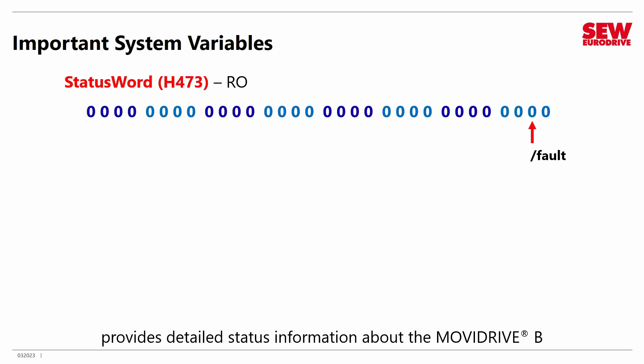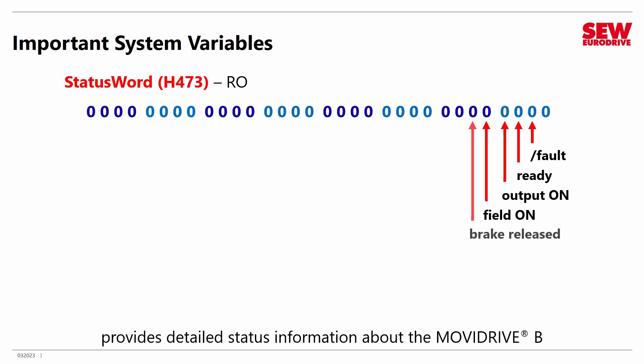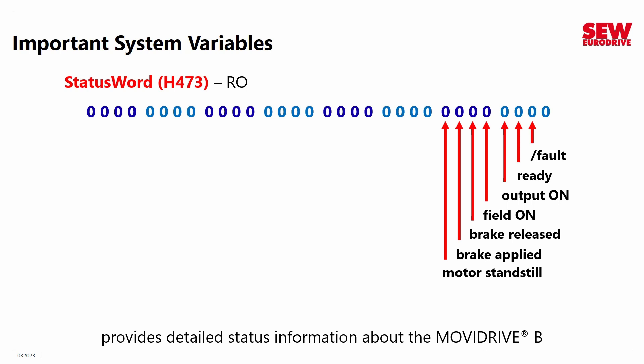Pay attention to that — some signals are inverted signals, most of them aren't. For example, the READY signal changes to 1 when the VFD is ready and 0 when it isn't. OUTPUT ON tells us the output transistors in the VFD have been activated if this bit is 1. FIELD ON tells us that the magnetic field is now rotating if this is 1. BRAKE RELEASED, if it's 1, says the brake has just been released. If BRAKE APPLIED bit is 1, it means the brake has just been applied. The MOTOR STANDSTILL bit gives us information about whether the motor is moving or not.